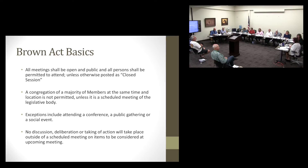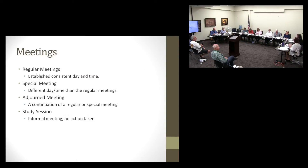Types of meetings: regular meetings, like we're having now, are established consistently in time — we are set for the fourth Wednesday of each month, though the bylaws allow for quarterly meetings. A special meeting is a different day and time from your regular meeting, which requires a motion and vote. An adjourned meeting is a continuation of the current meeting when you couldn't finish for specific reasons. You can also hold study sessions, which are informal meetings where no action is taken — just a presentation of information.